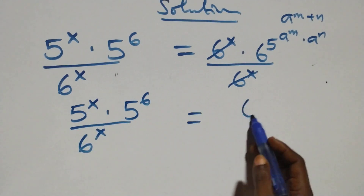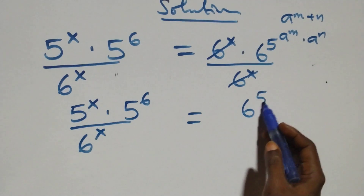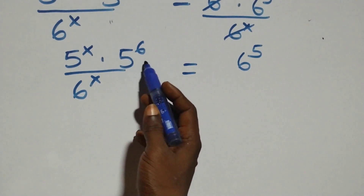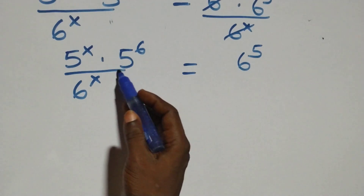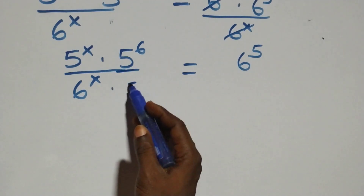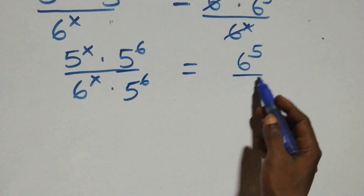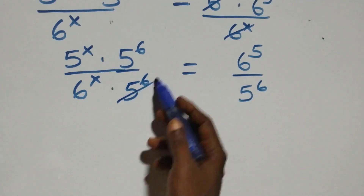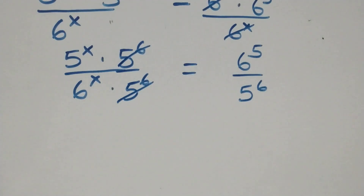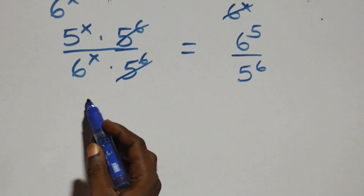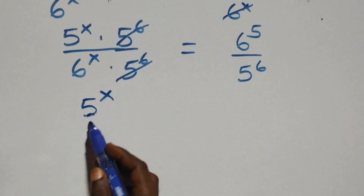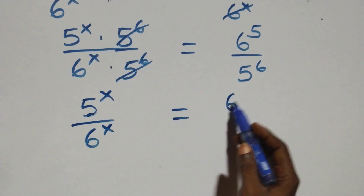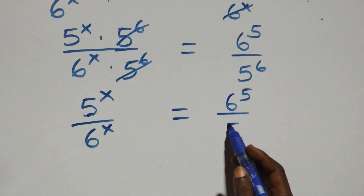Now we are left with 6 raised to power 5 on one side. Then to remove 5 raised to power 6, we also divide both sides by 5 raised to power 6. Now 5 raised to power 6 cancels out on this side, and we are left with 5 raised to power x over 6 raised to power x, which equals 6 raised to power 5 over 5 raised to power 6.